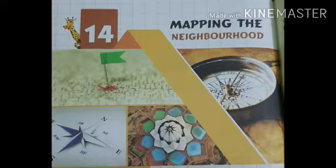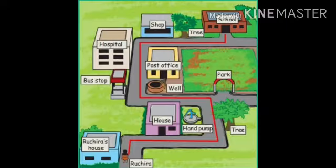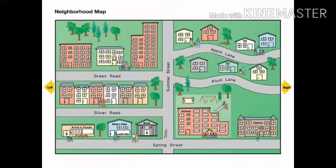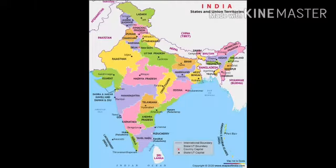Hello students, today we are going to learn about map and its elements in EVS. Suppose you want to go to your friend's house and you don't know the location. So what do you need to reach your friend's house? You just need a map. Maps are the drawings that show us the position of various places, as you can see in this picture. We use maps to go from one place to another.